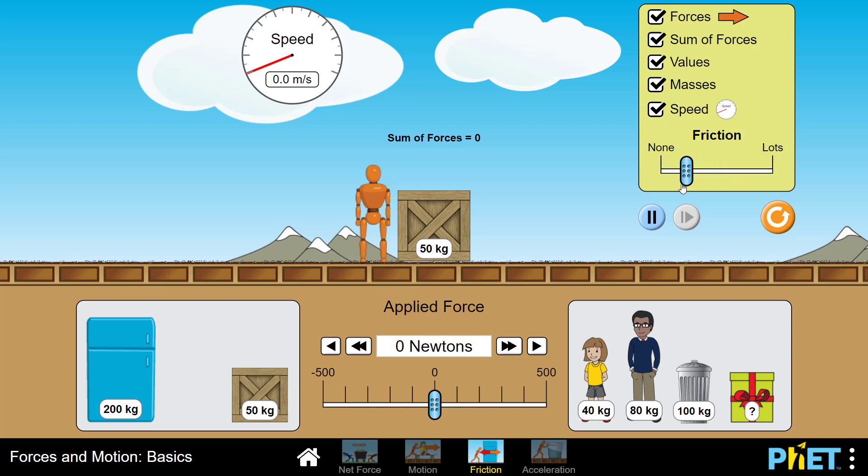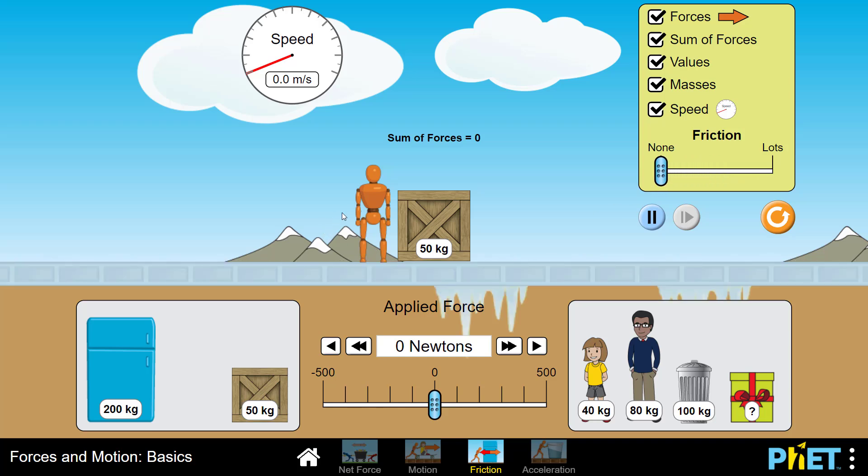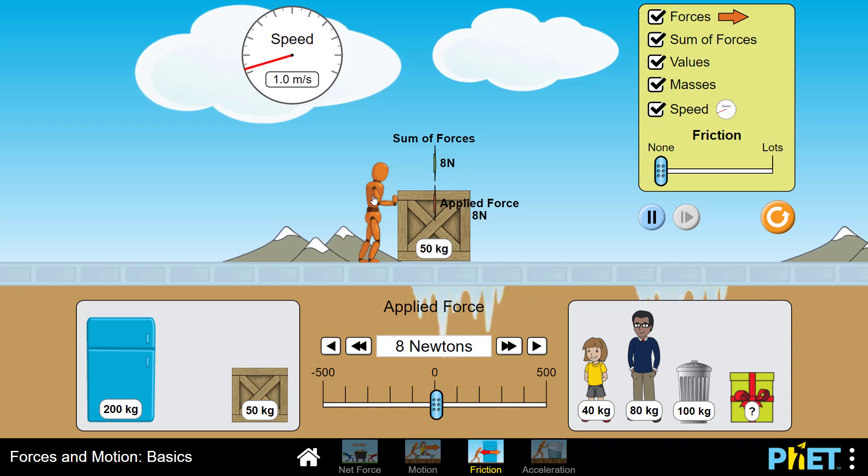Watch what happens when I turn off friction, walk up to the box again, and even if I apply a small force, the box starts to move. You can see the speedometer indicate that it is starting to move with an increasing velocity.